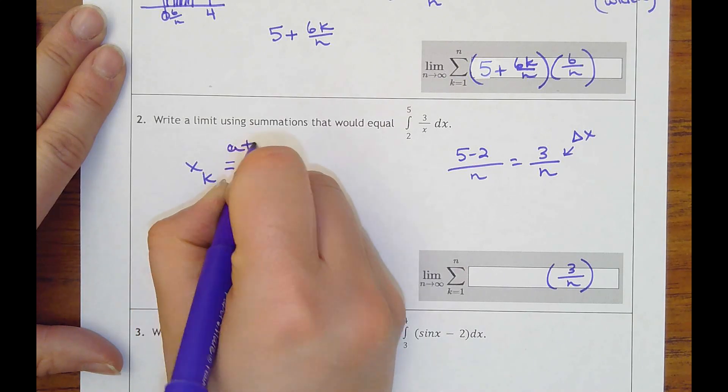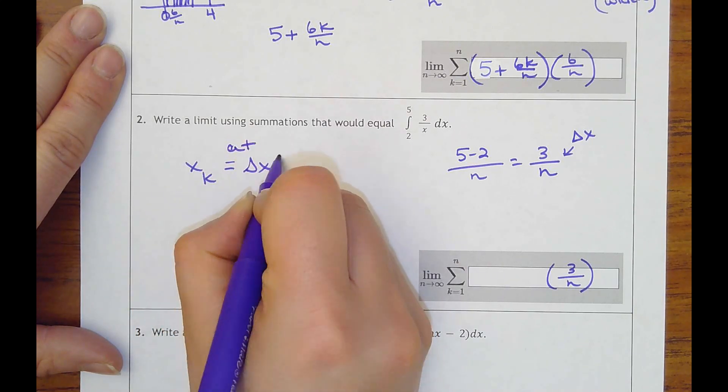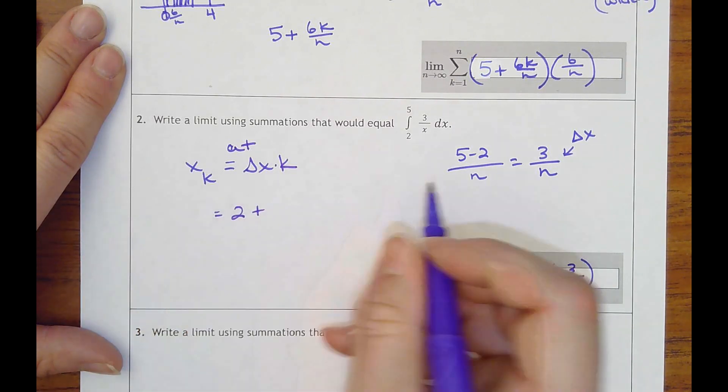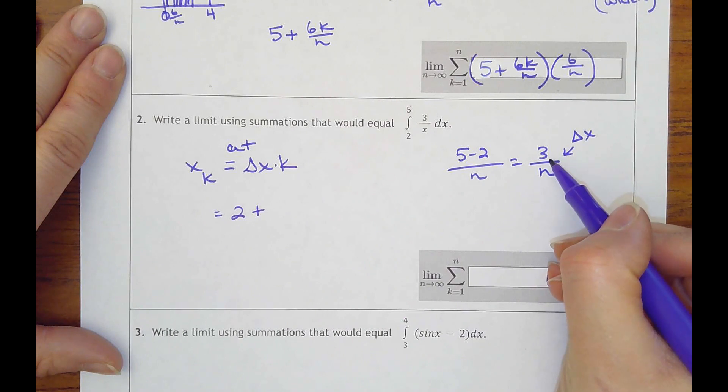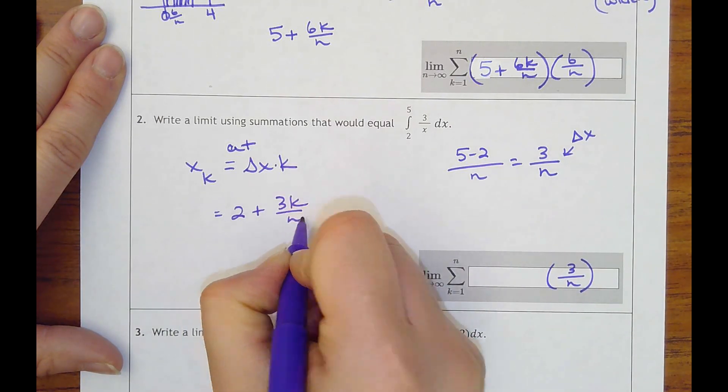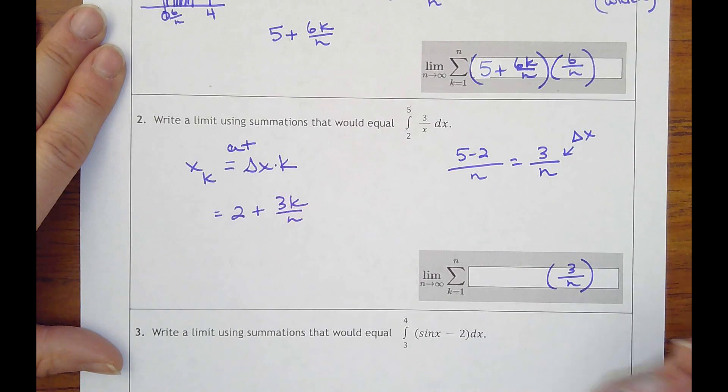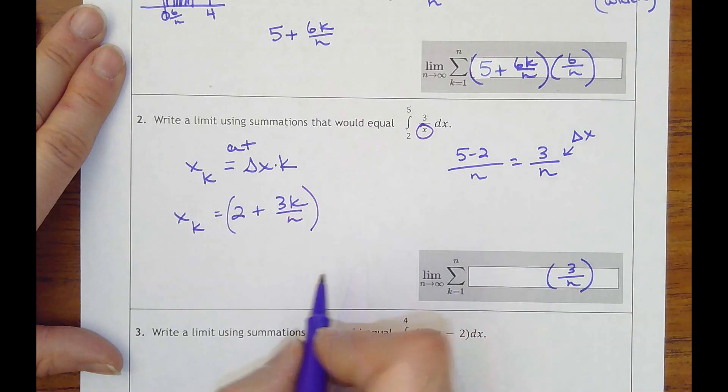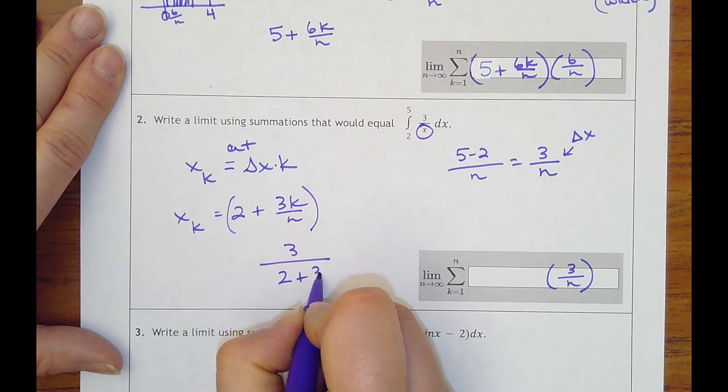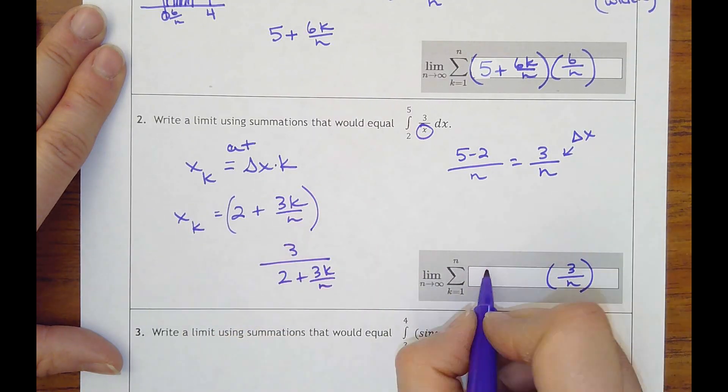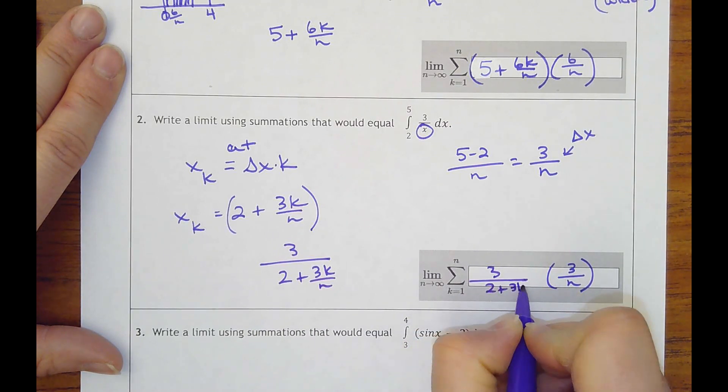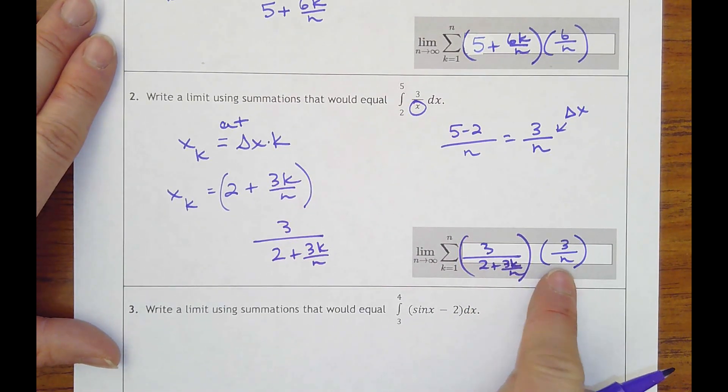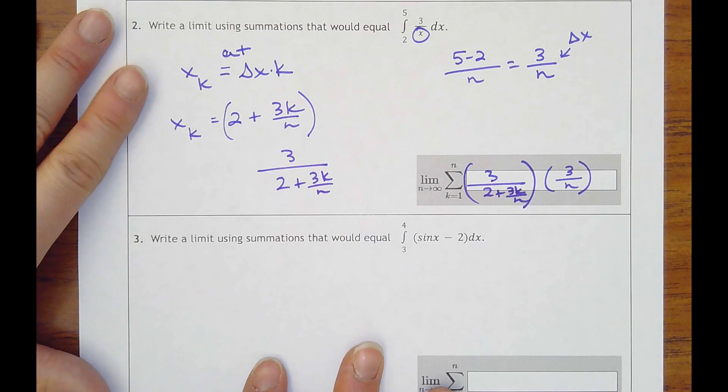I should put a plus delta x times k. And so our a value is 2 plus k of these rectangles, so it'd be 3k over n. That's for x sub k. So this has to get plugged in for x in our function, so it'd be 3 over 2 plus 3k over n. And put parentheses around this, so this is the function, like the f of x, and this is times the width: height times width.